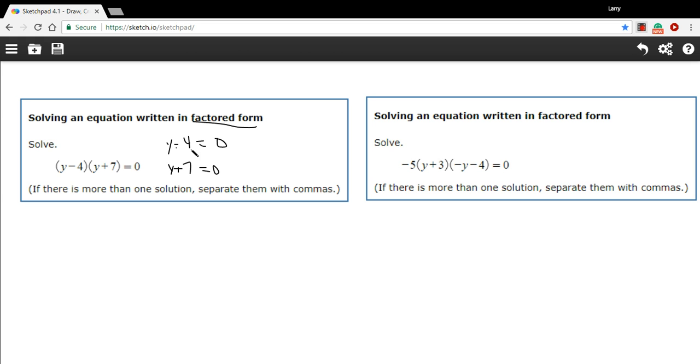In this case, if I wanted to solve this top one for y, I would just add four to both sides. And I would get y equals four. This one, I would need to subtract seven from both sides, and I would get y equals negative seven.